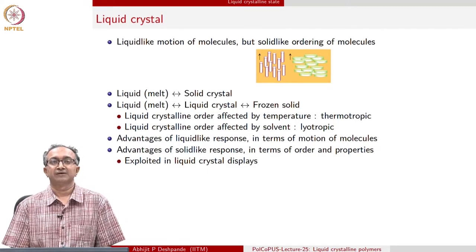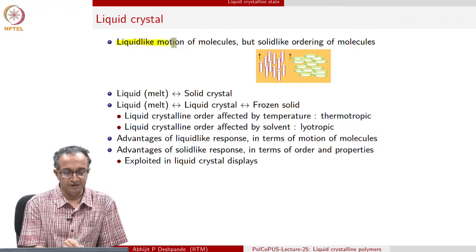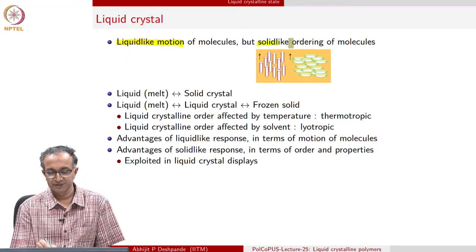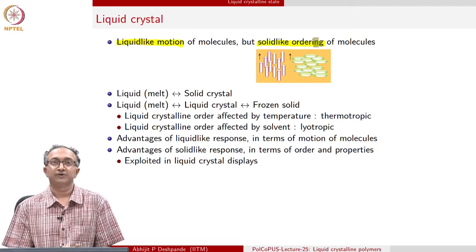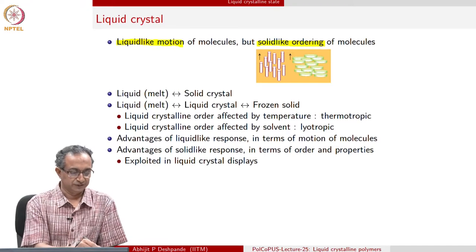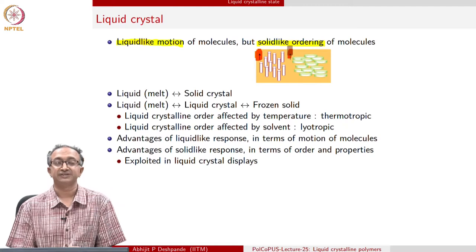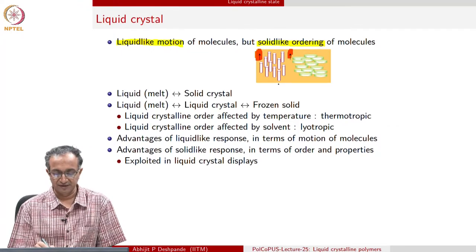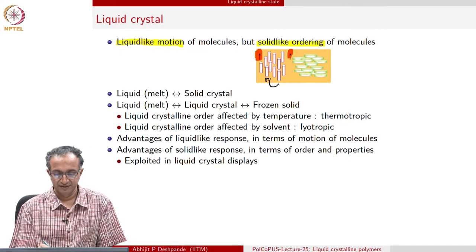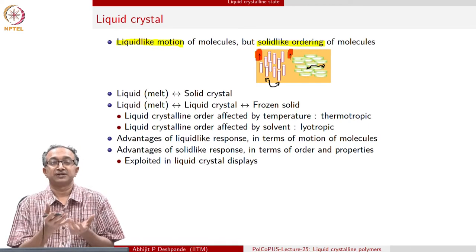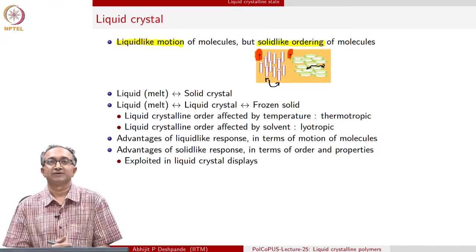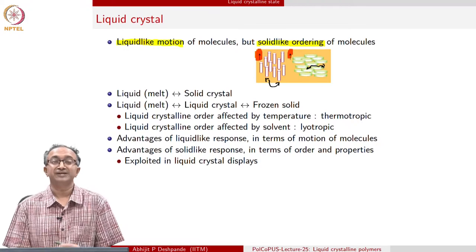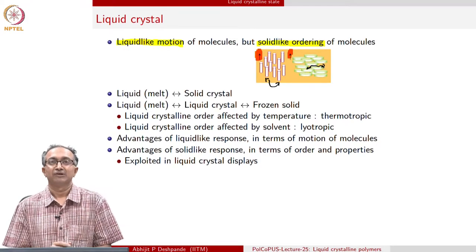Liquid crystals are materials where there is a liquid-like motion of molecules, but at the same time there is solid-like ordering. For rods or discs, the ordering is clear. For example, with the arrow which is shown here, you can clearly see that there is an orientation which we can assign for the disc or for the cylinder. What is crucial about this state is that there can be exchange between these rods or between two discs. So therefore, translational motion of these entities is possible. However, orientationally, they remain more or less fixed.